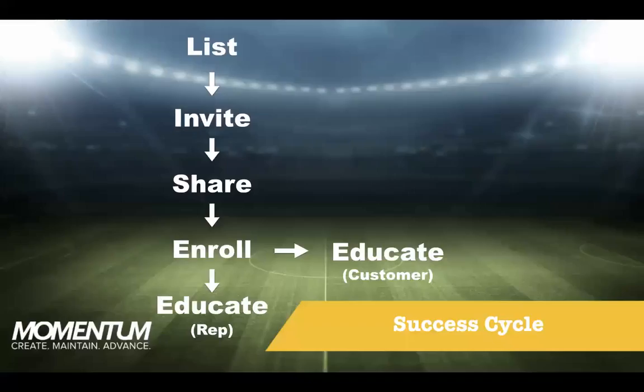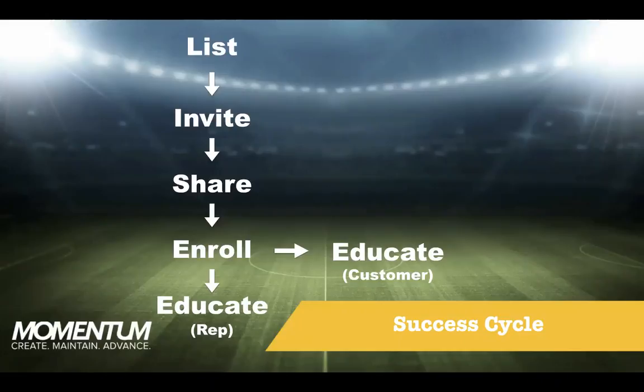We'll start off with the success cycle. The success cycle is basically the starting point of your WorldVentures business. You've got to start off by making your list. The focus board is not where you put your list — the focus board is where you put your exposures. You should have your own separate WorldVentures folder or journal where you put your list together. That should be at least 150 names: people you know, your contacts, names from social media, friends from high school, college, coworkers, doctors, lawyers. I encourage you to download a memory jogger to help develop your list.